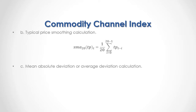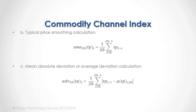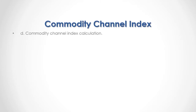Step C: Mean Absolute Deviation (Average Deviation) Calculation. The current period 20-day Average Deviation of typical prices is equal to 1 divided by 20, multiplied by the sum of the absolute value of previous period typical prices up to the current period typical price, minus the 20-day current period rolling arithmetic mean of typical prices. Step D: Commodity Channel Index Calculation. The current period 20-day CCI with constant factor 0.015 is equal to the current period typical price minus the current period 20-day Simple Moving Average of typical price, divided by 0.015 multiplied by the current period 20-day Average Deviation of typical prices.